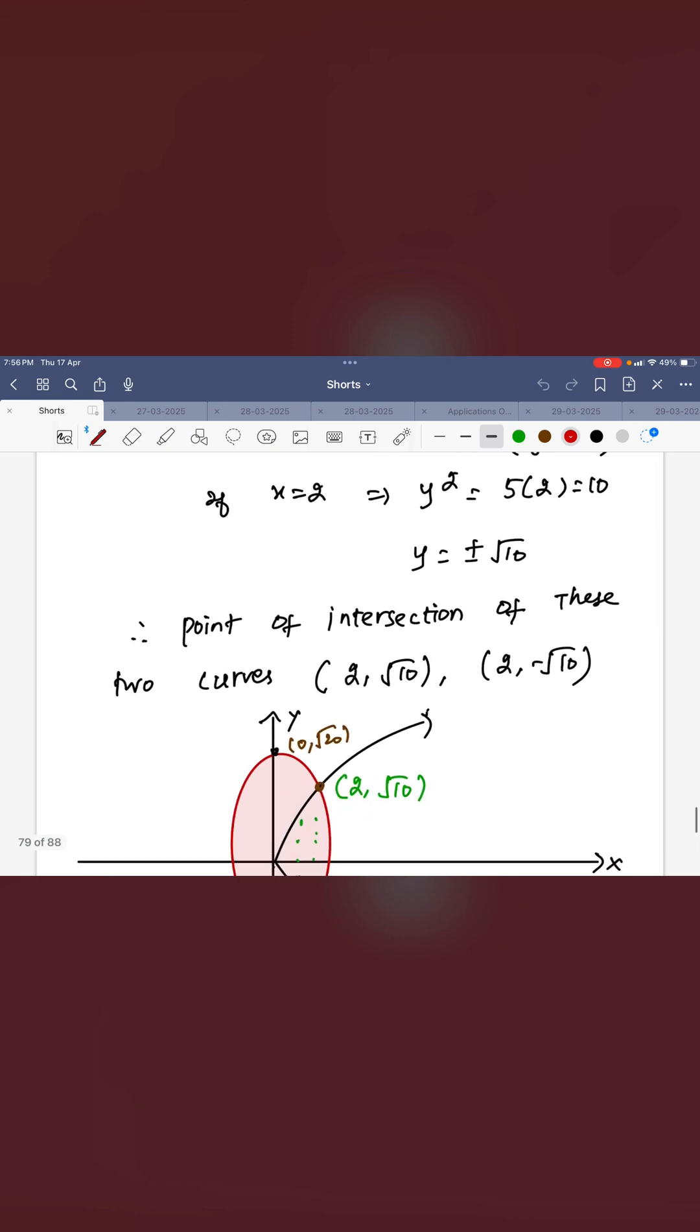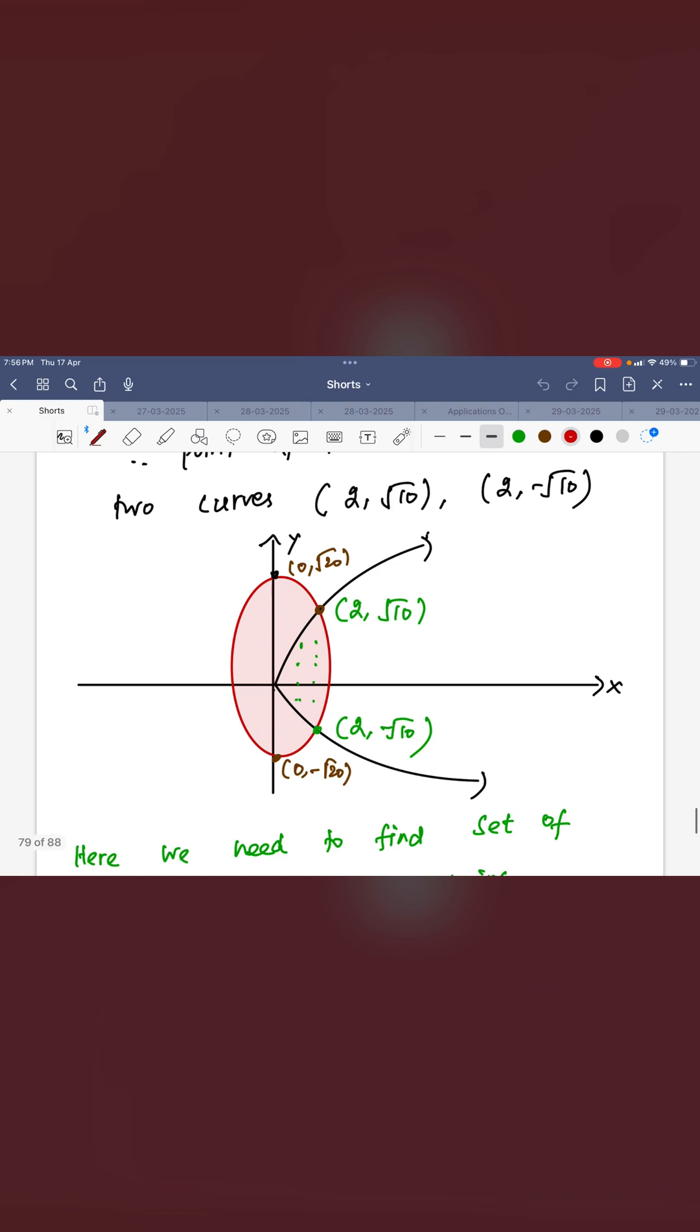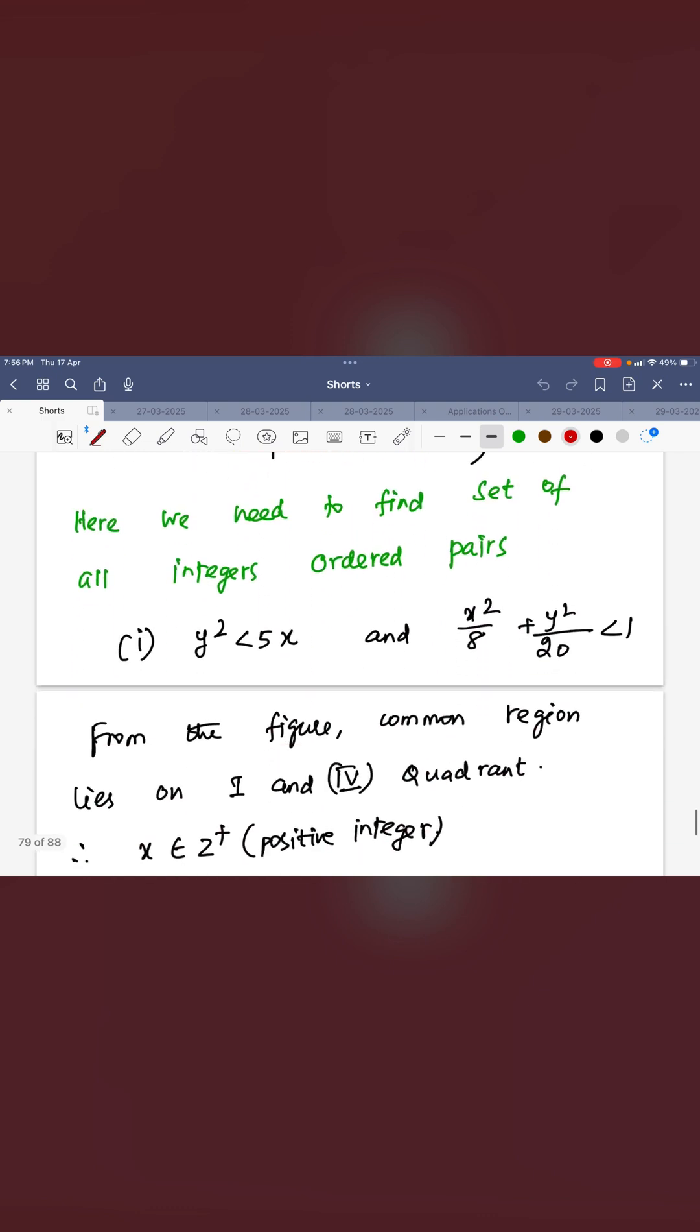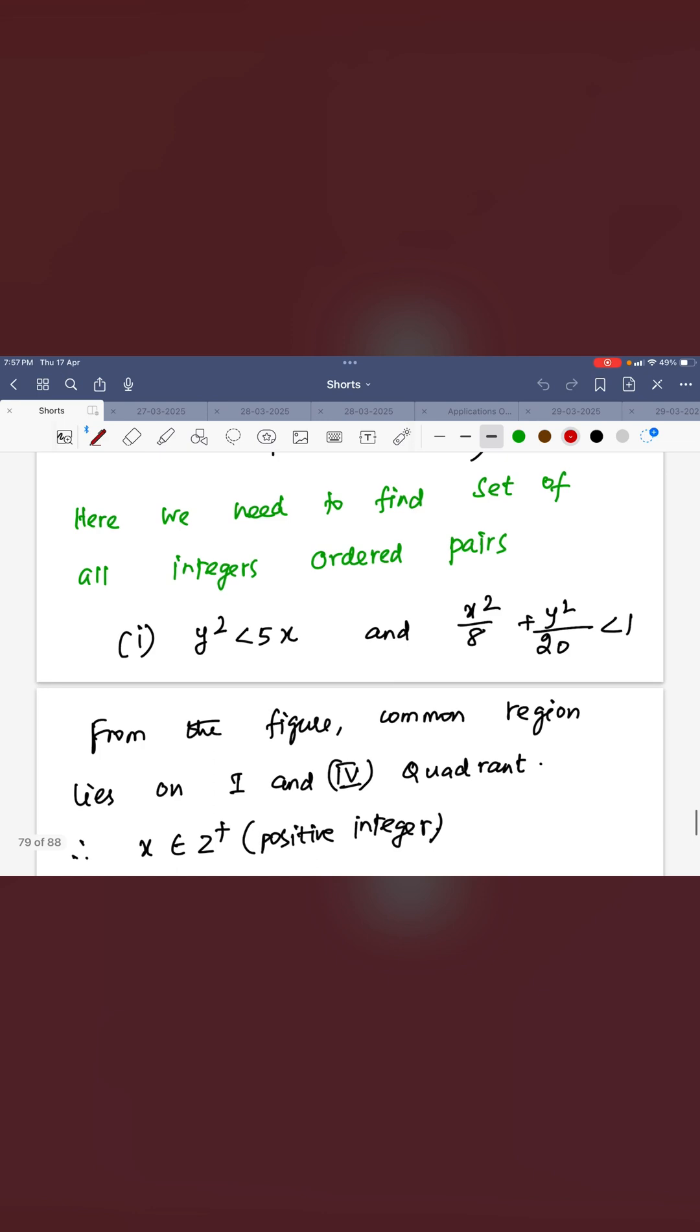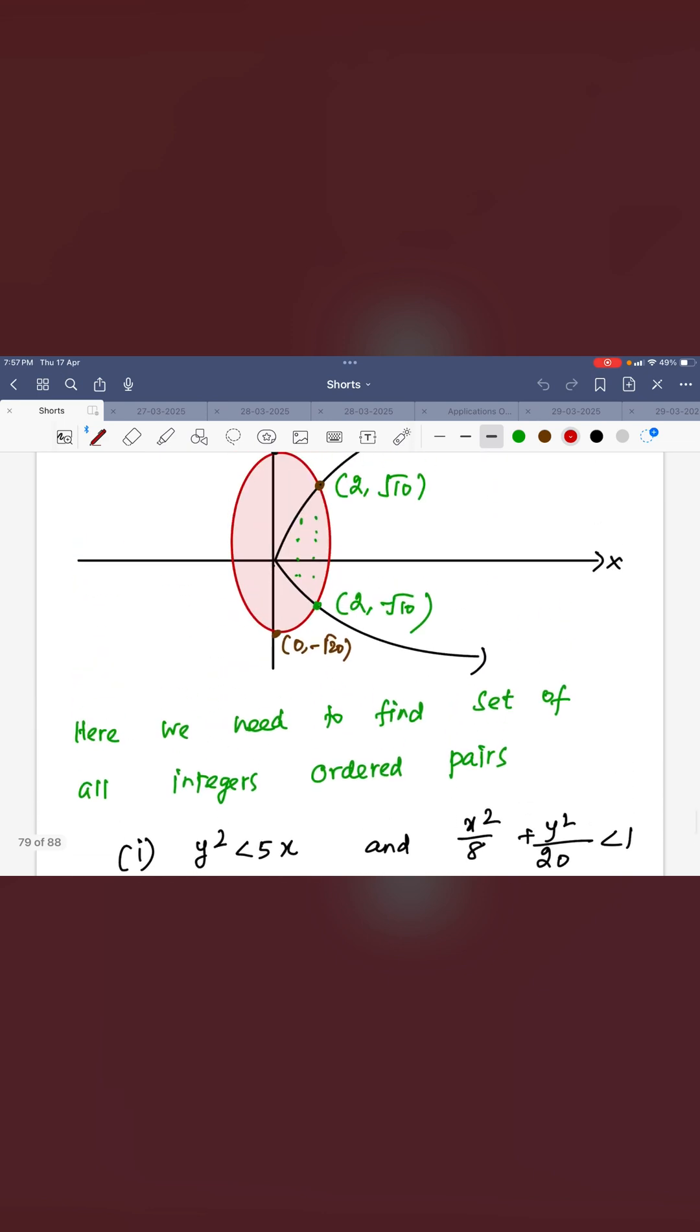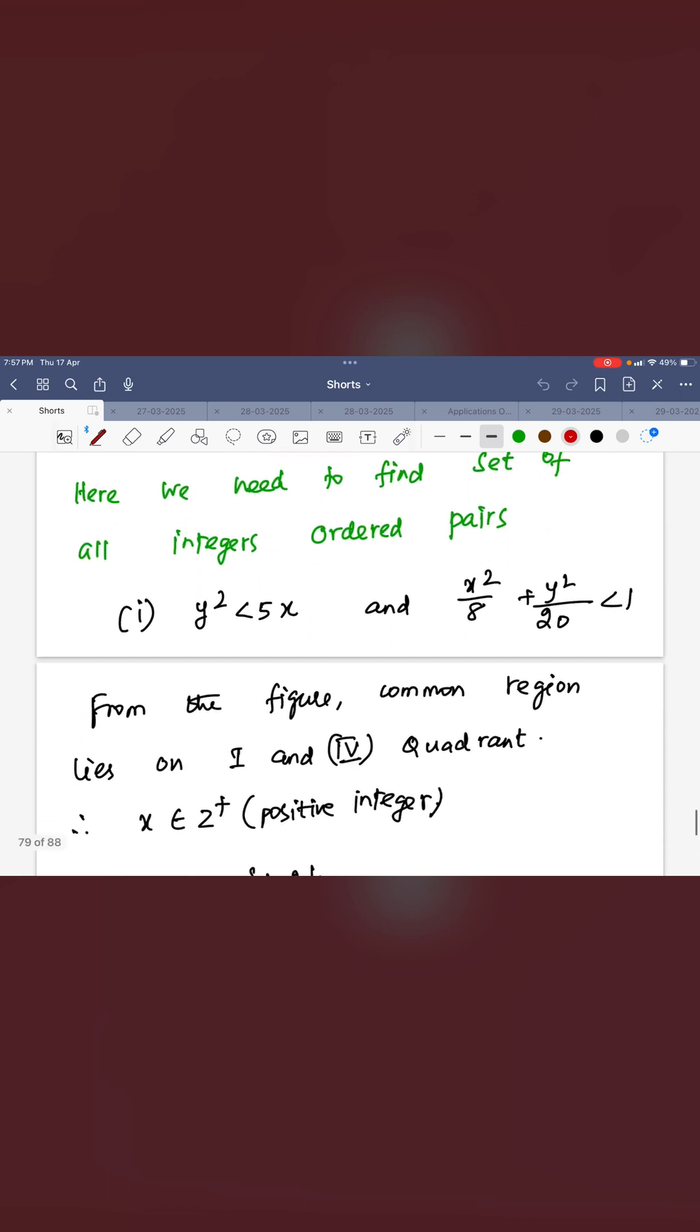2 comma root 10 and 2 comma minus root 10 is the point of intersection. Within the regions only you can find all order pairs of x comma y. Now how to find the x value? You can slice in the first and fourth quadrant, x will be positive only. So therefore x equals 1 and 2 only possible.